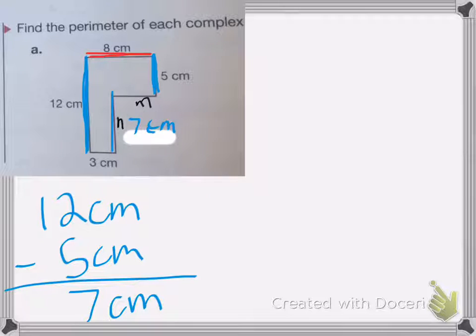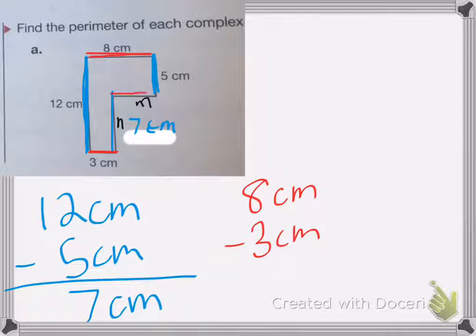Now with M, I need to find, I have 8 centimeters as my total length, and I have 3 centimeters. So that means I'm going to subtract 8 centimeters minus 3 centimeters to get M. 8 minus 3 is 5. So I end up with 5 centimeters.